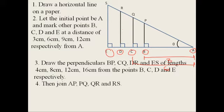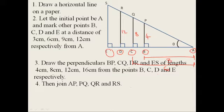Then join A to P, P to Q, Q to R, and R to S. That means BP is 4 cm, CQ is 8 cm, DR is 12 cm. From the points B, C, D, and E respectively. Then join AB, then BQ, QR, and RS.